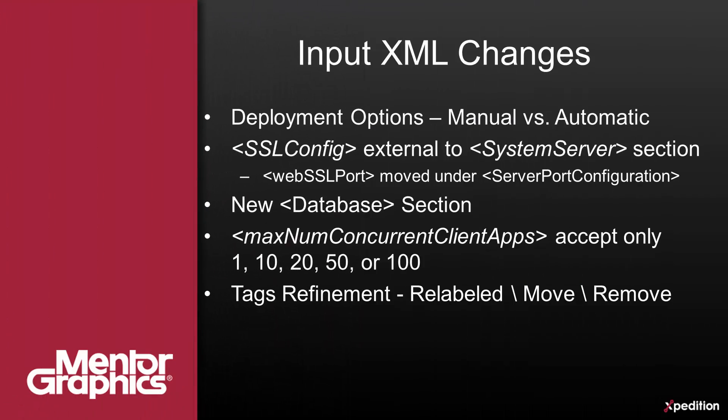Let's review the main changes in the structure of the XML file. As mentioned, we simplified the deployment options — it now supports either automatic or manual deployment. We established a new SSL config section and removed information from the system server section. At the same time, we shifted the web SSL port to the server port configuration section, where it will now be auto-assigned like the rest of the XDM Server ports.